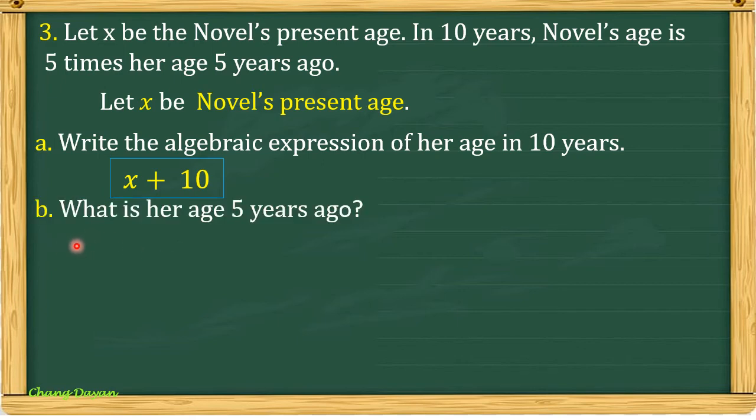Letter B, what is her age 5 years ago? So I have here the 2 ago, which means you have to subtract. So we have to subtract 5 from the present age x. So our answer for letter B is x minus 5.